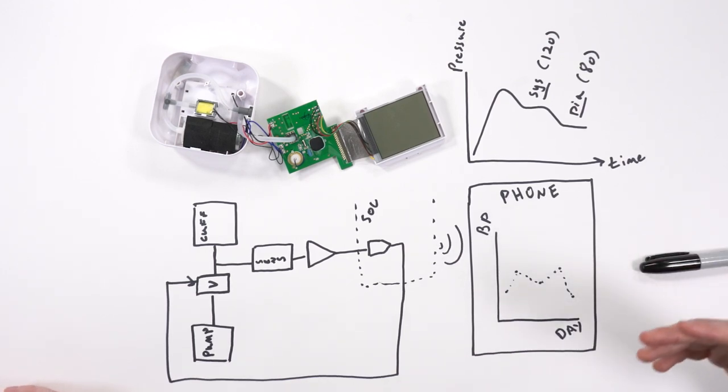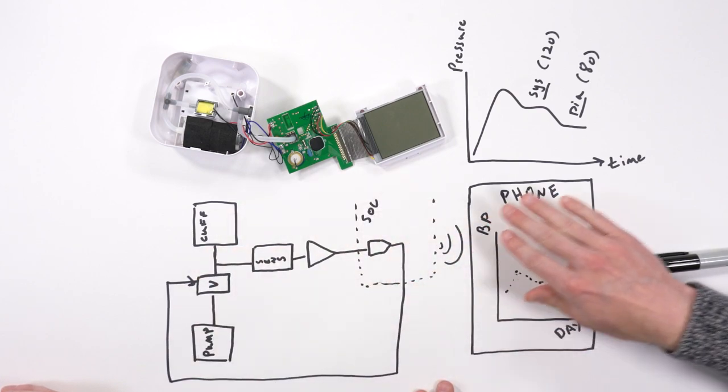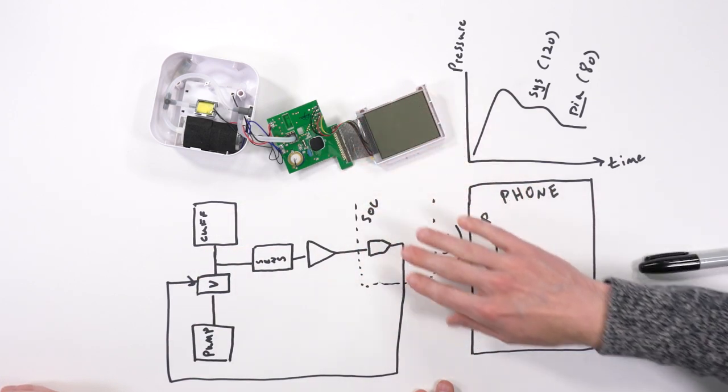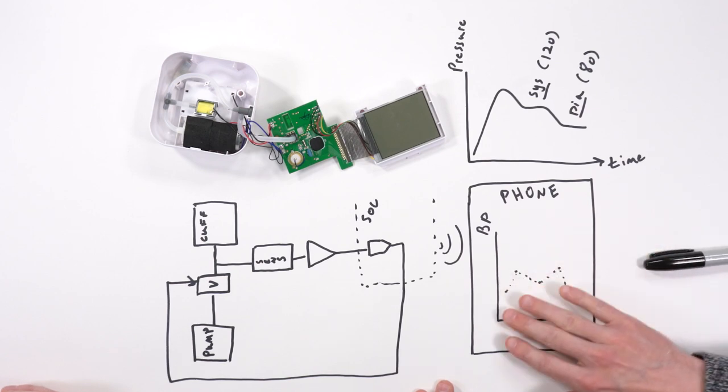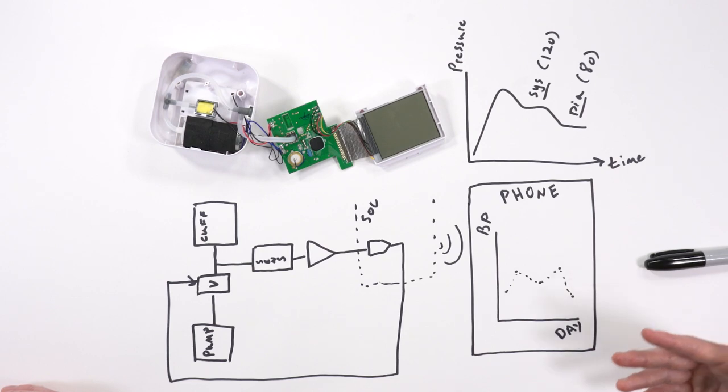Correct. So oftentimes doctors will want to know what your blood pressure is over multiple days. So once it reads the blood pressure, you can interface with your SOC to a phone or a tablet to record your blood pressure over multiple days. And that's why having connectivity is so convenient and so important.